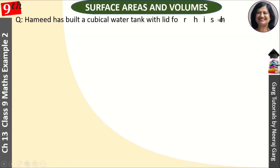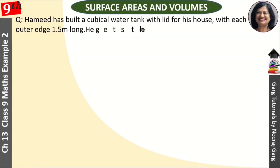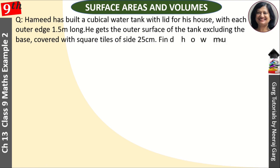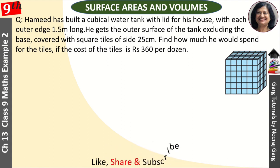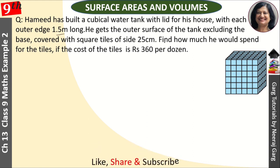Hi, this is Neeraj Garg and you are watching chapter 13, surface area and volume. Hamid has built a cubical water tank with lid for his house, with each outer edge 1.5 meters long. He gets the outer surface of the tank excluding the base covered with square tiles of side 25 cm. Find how much he would spend for the tiles if the cost of tiles is Rs. 360 per dozen.